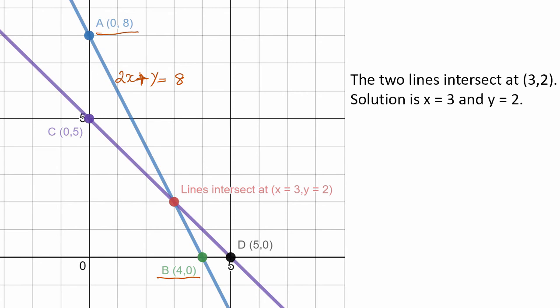Next, the second line: (0,5) and (5,0), we plot these points. This is x plus y equals 5. We join these two lines and we see that it intersects at this point, which is (3,2).